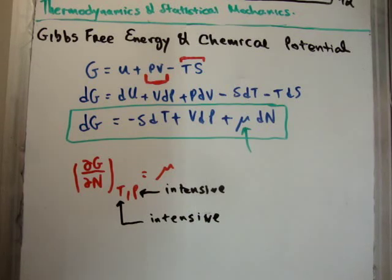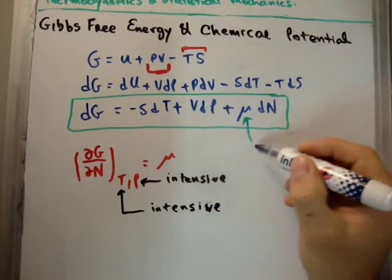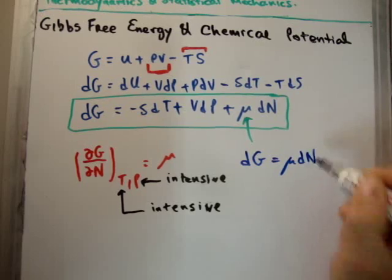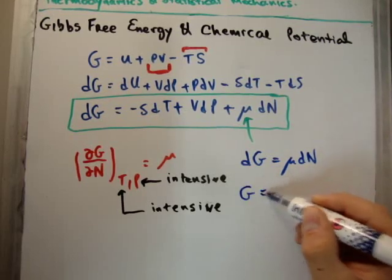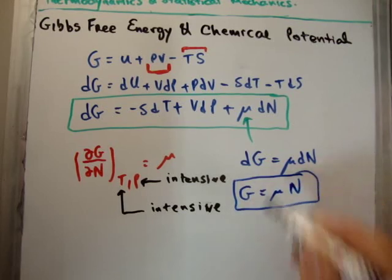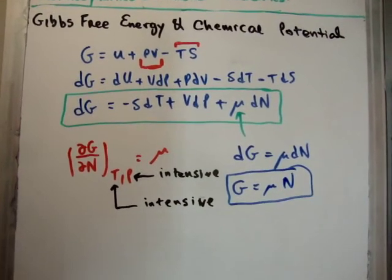So at the moment, what this partial derivative is implying is as follows. If we integrate, of course, that means that it's implying that DG is equal to mu DN, or if we integrate both, G, capital G, the Gibbs free energy, is equal to mu times N. So it implies that the chemical potential is the Gibbs free energy per particle of something.